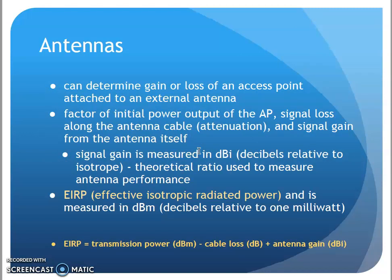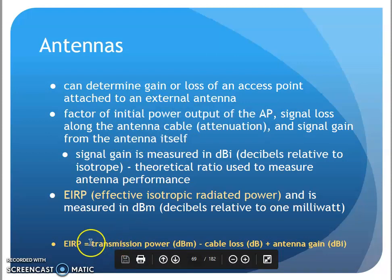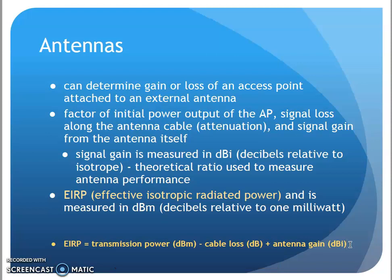We can calculate the effective power from an antenna using Effective Isotropic Radiated Power (EIRP). This is a factor of the output power of the access point, the signal loss across the antenna cable, and the signal gain from the antenna itself. Using a simple add/subtract formula, you can calculate the effective radiated power of an access point given those combined factors.